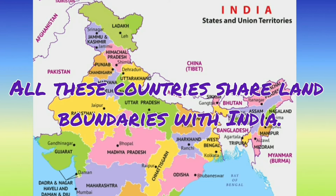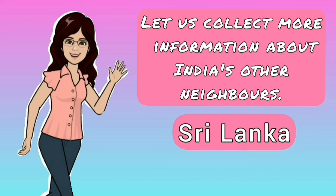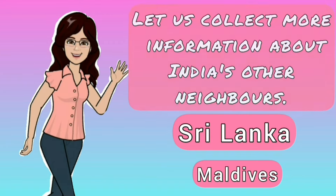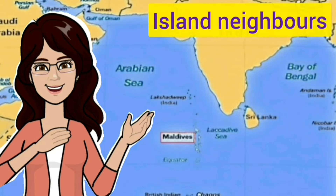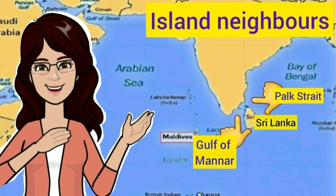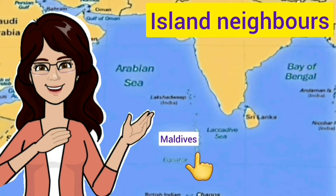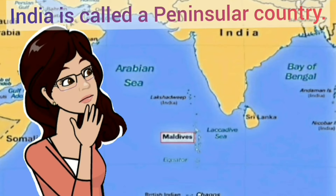India's other neighbors are Sri Lanka and Maldives, located to the south of India. They are India's island neighbors. Sri Lanka is separated from India by a narrow channel of sea formed by the Palk Strait and the Gulf of Mannar, while the Maldives islands are situated to the south of Lakshadweep Island.